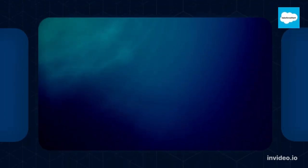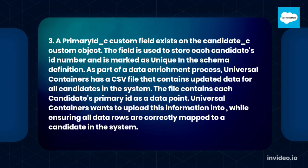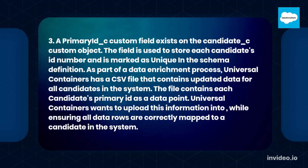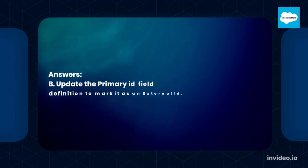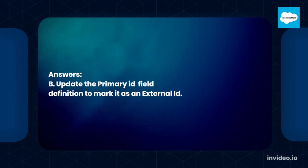Question 3: A primary_id__c custom field exists on the Candidate__c custom object. The field stores each candidate's ID number and is marked as unique in the schema definition. As part of a data enrichment process, Universal Containers has a CSV file with updated data for all candidates. The file contains each candidate's primary ID. Which technique should the developer implement to streamline the data upload? A. Upload the CSV into a custom object related to Candidate__c. B. Update the primary_id__c field definition to mark it as an external ID. C. Create a before insert trigger to correctly map the records. D. Create a before save flow to correctly map the records. Answer: B. Update the primary_id__c field definition to mark it as an external ID.